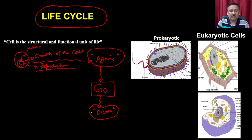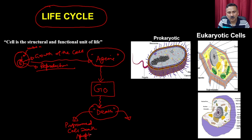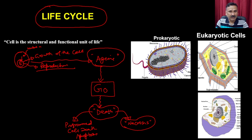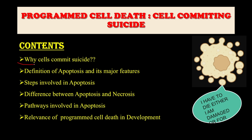The death within the cell can be induced by two different processes. It can be done either by a programmed manner, which is called as programmed cell death or apoptosis, or it can be done in another method which is called as necrosis. We are going to discuss in detail about the differences between these two. The cell has to take a decision whether it wants to go for the apoptotic pathway or the necrotic pathway.